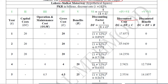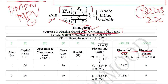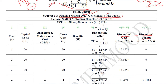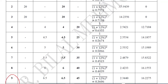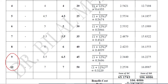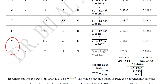We have calculated the discounted costs separately and the discounted benefits separately, because we need those values individually for BCR. In the columns, you can see they have been discounted as done before — there is nothing new in this. The sum of discounted costs and the sum of discounted benefits are shown here.